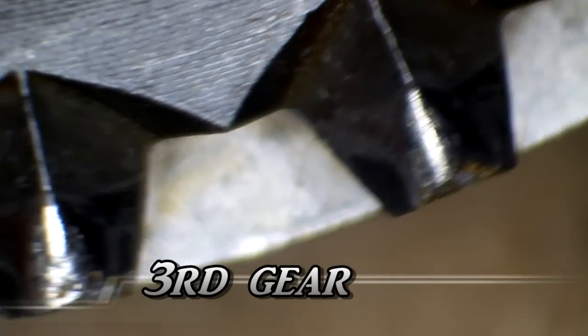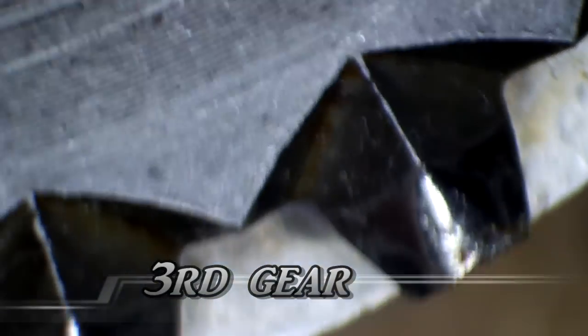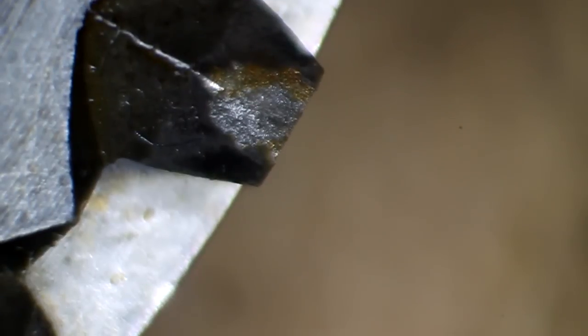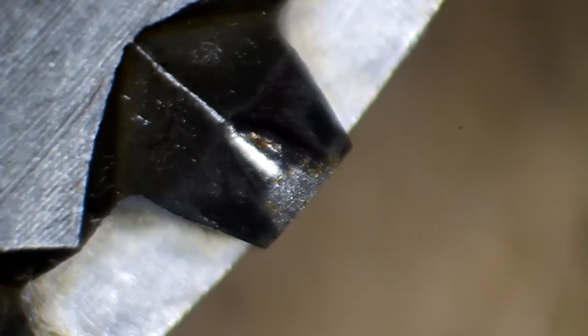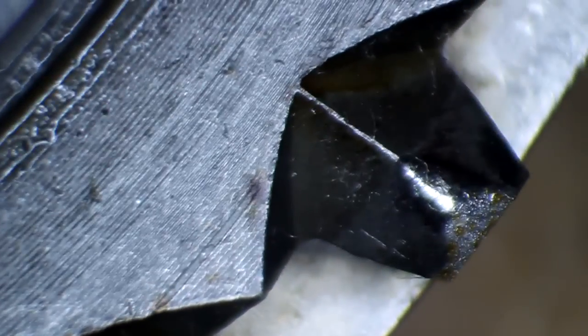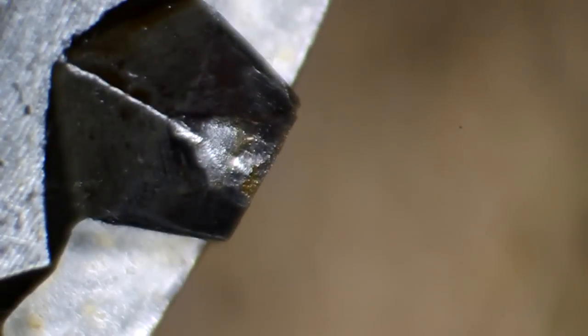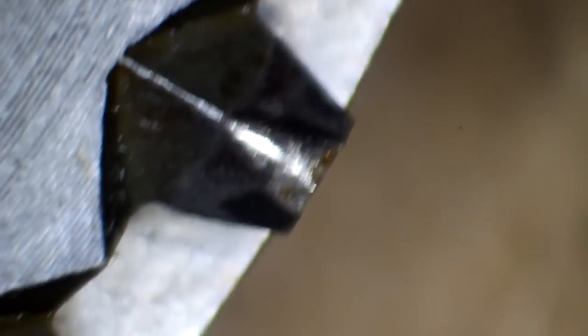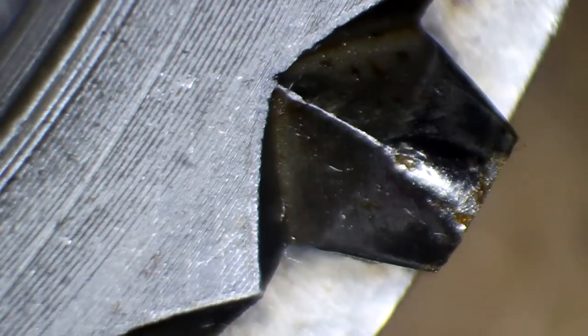We're now looking at some of the teeth on the third gear drive hub. We can see there's some pitting, some scoring. Some of them look pretty bad. There's a really bad looking one there. I think we're going to end up replacing this drive hub. There's another one that's kind of beat up. Just looking at all the little teeth where it engages the synchro hub. So that is our third gear drive hub.